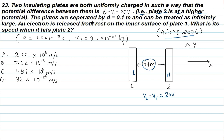An electron is released from rest on the inner surface of plate 1. What is its speed when it hits plate 2? This is a very simple question.